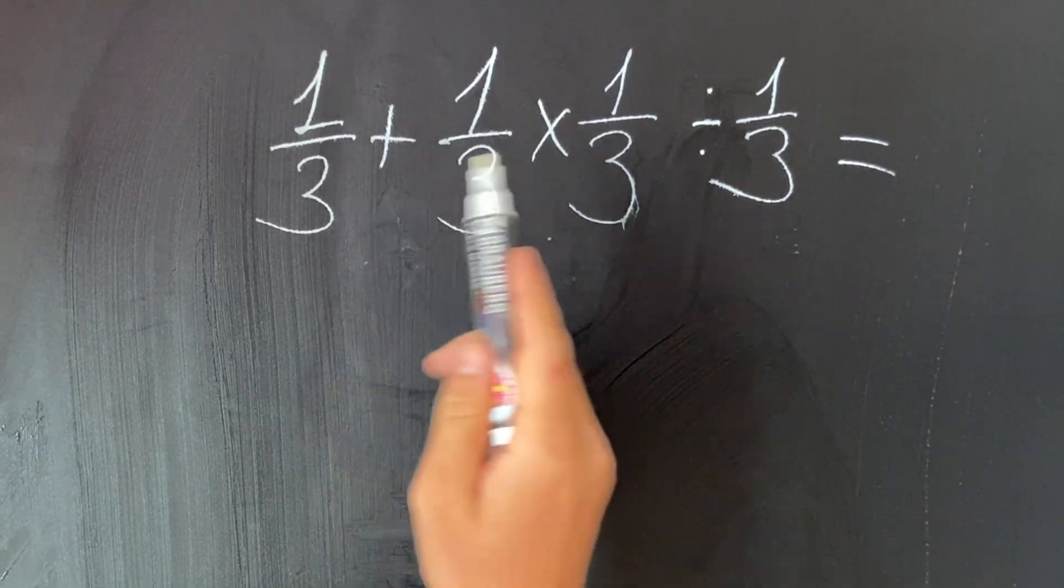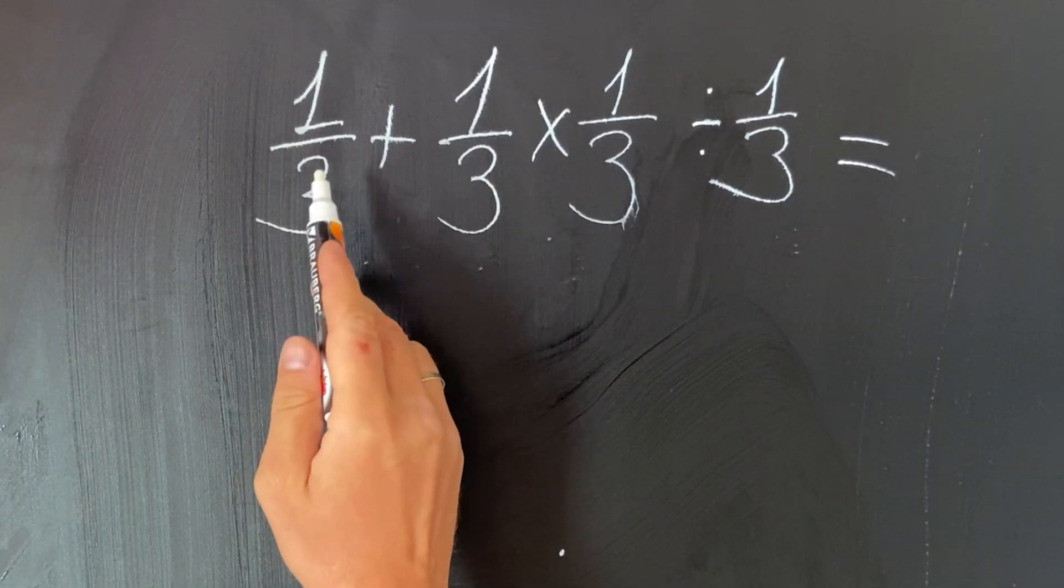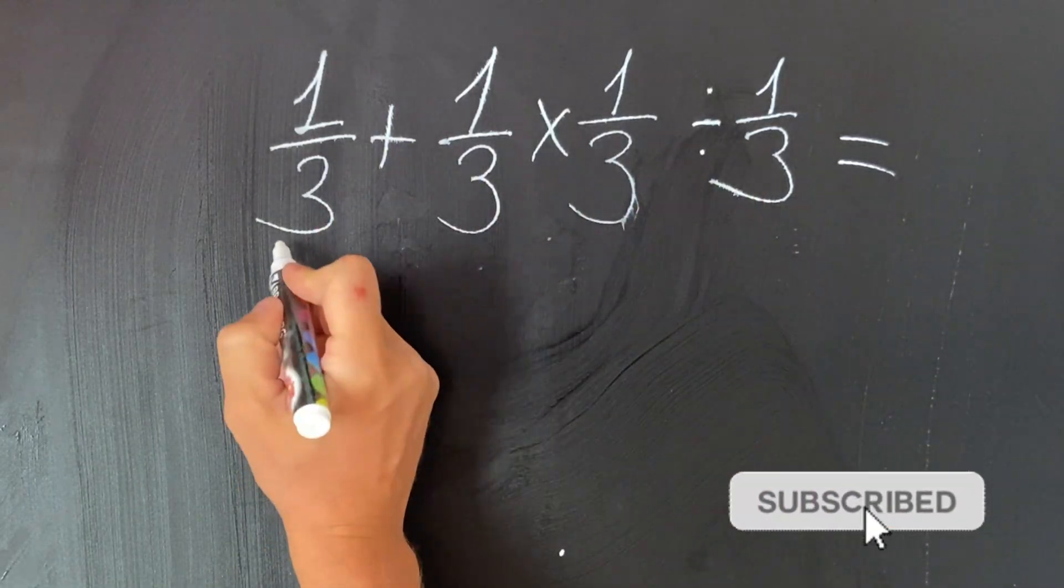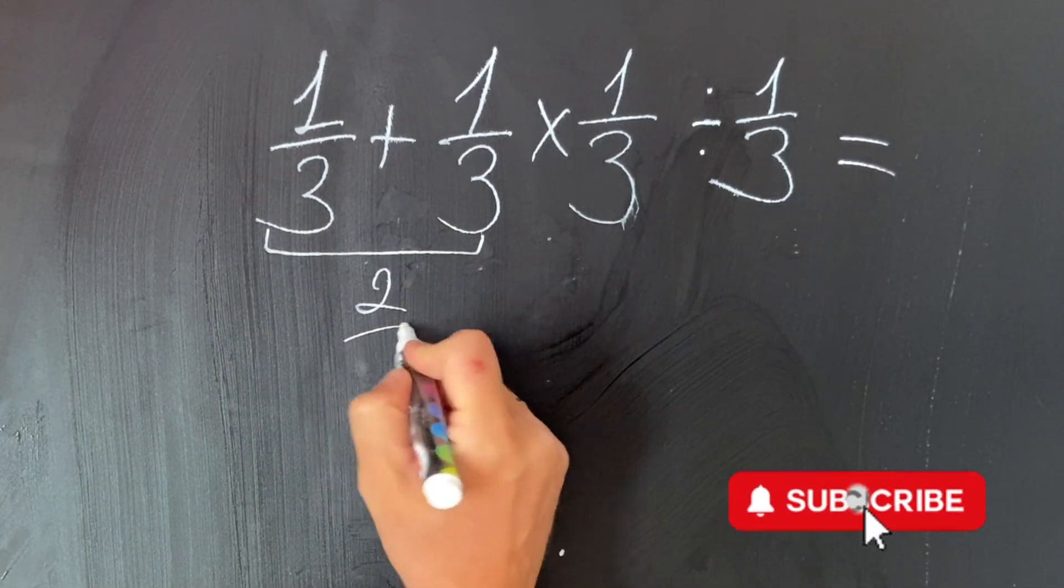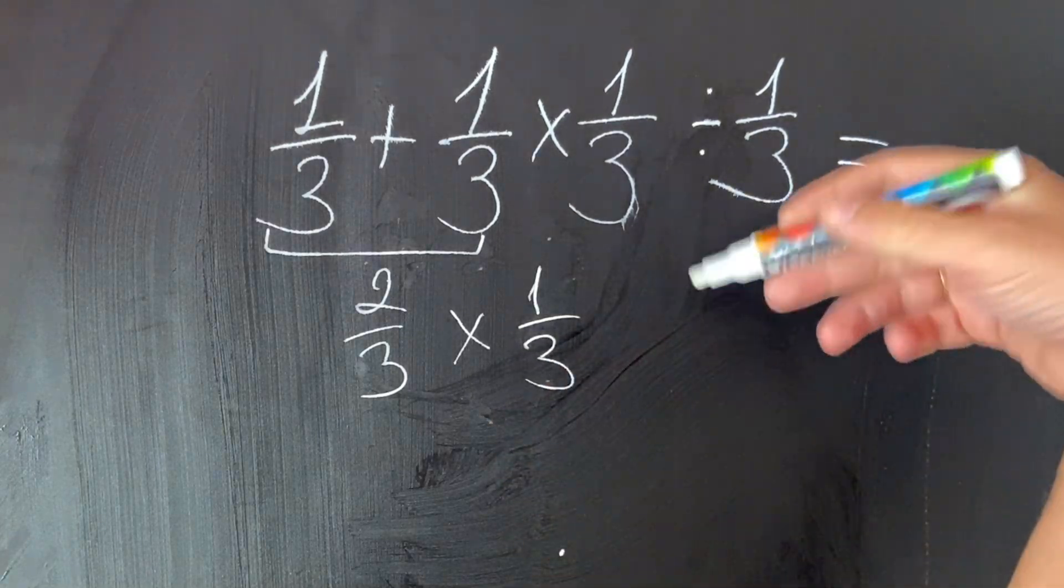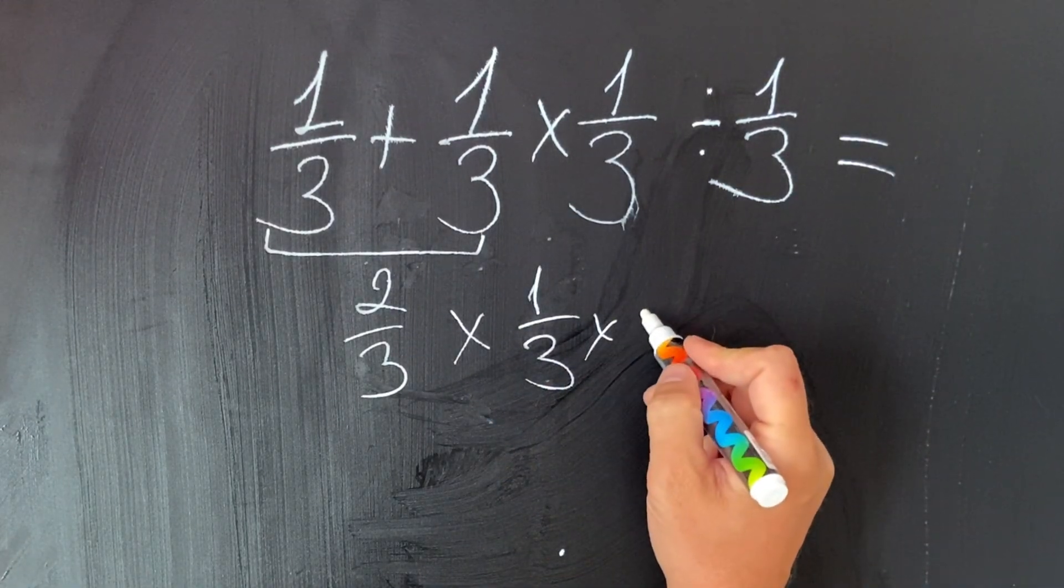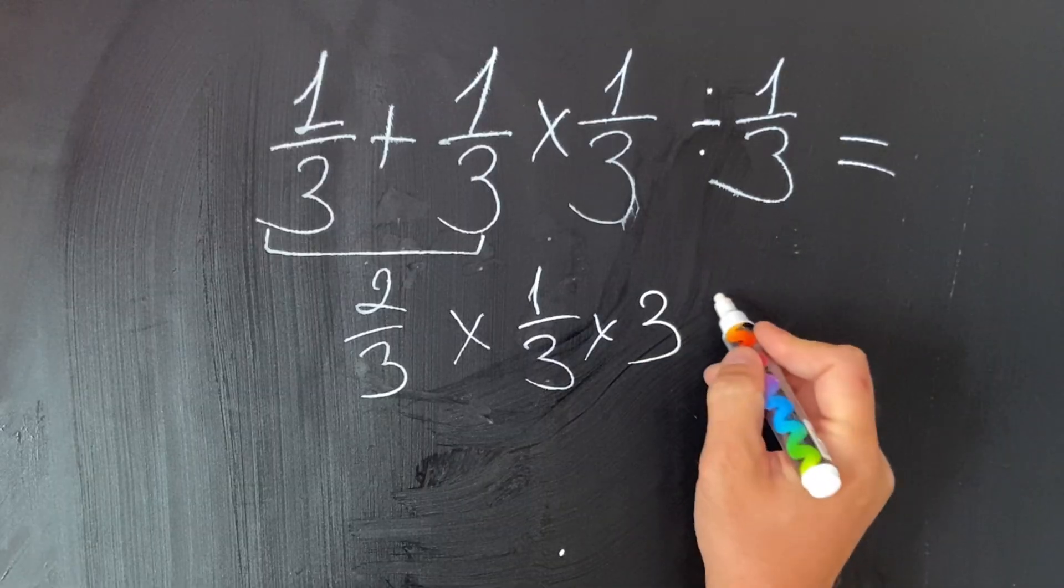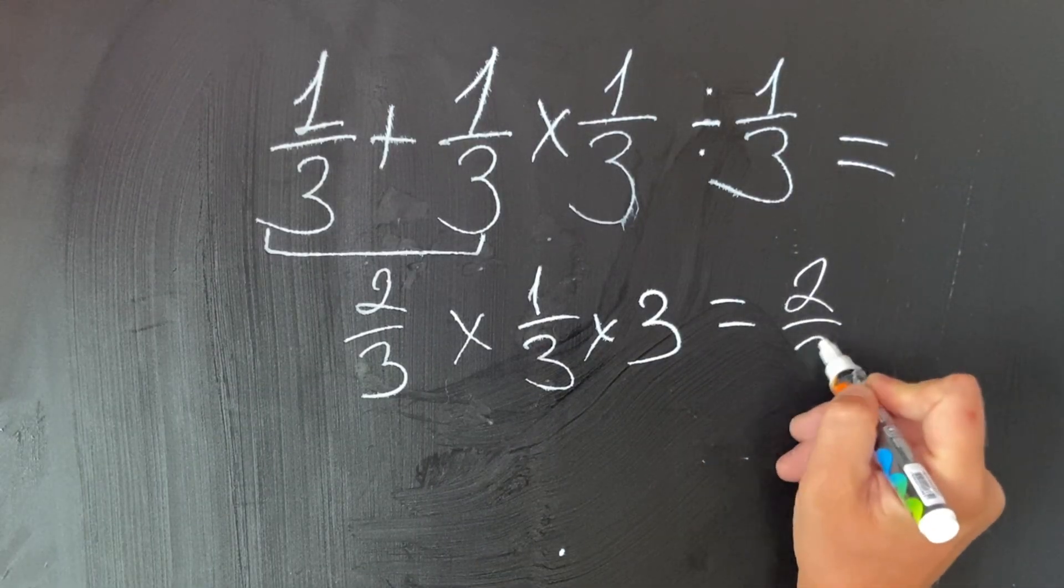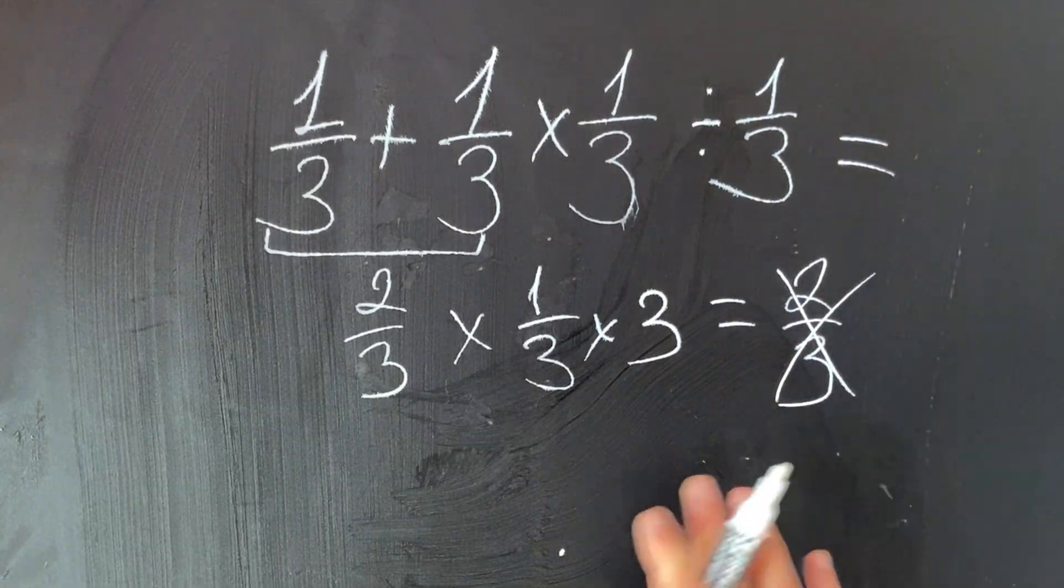They don't follow the order of operation and start right away with the addition. So what they get is two-thirds, then two-thirds multiply by one-third. Then, of course, they flip it and multiply by three. So in this case what they have is two-thirds, but this is the wrong answer.